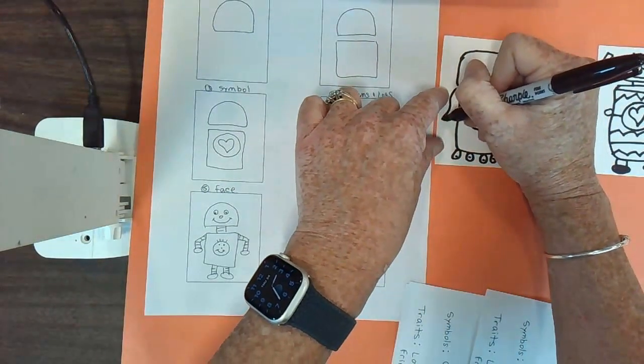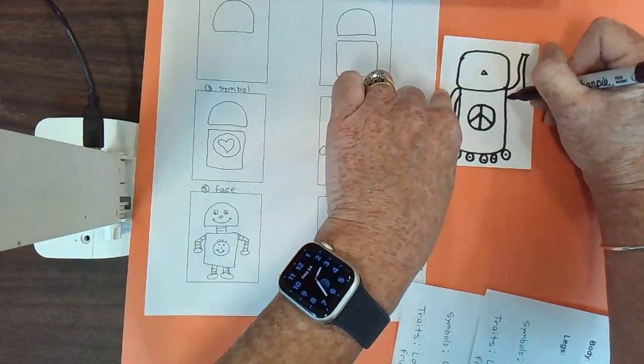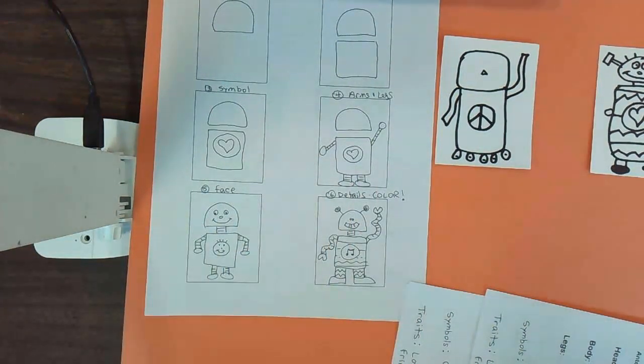And then maybe I'll have some arms come down like that. And maybe I'll have one arm waving. Okay. Next, it says to add a face.